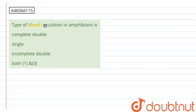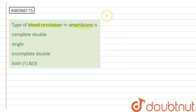The question is: the type of blood circulation in amphibians is — option one: complete double circulation, option two: single circulation, option three: incomplete double circulation, and option four: both option one and three. The primary type of circulation seen in amphibians is double circulation.